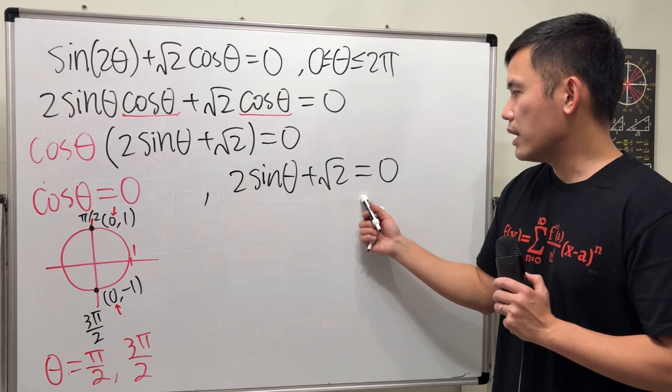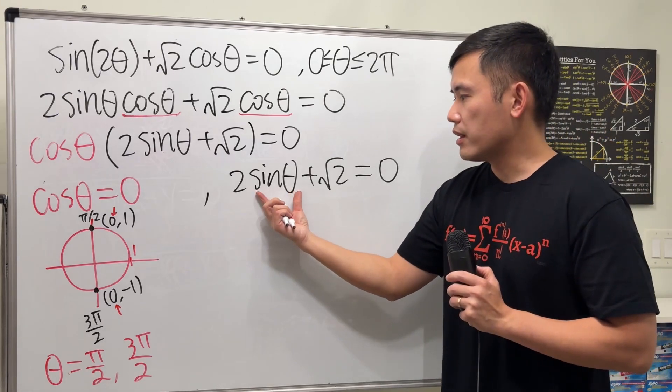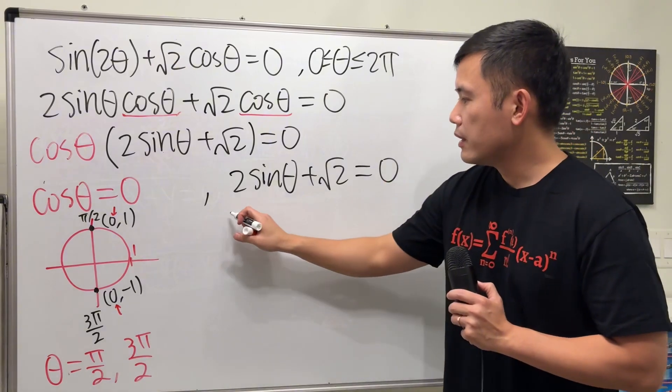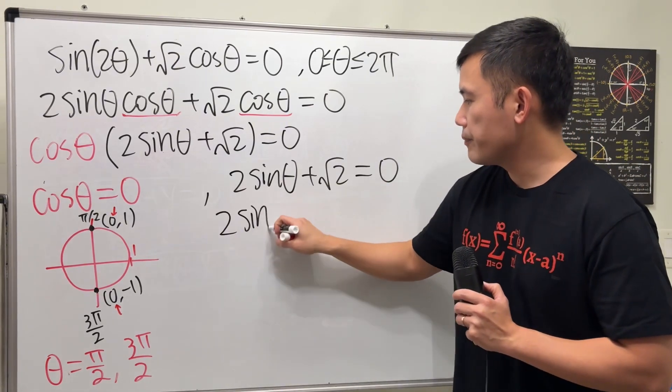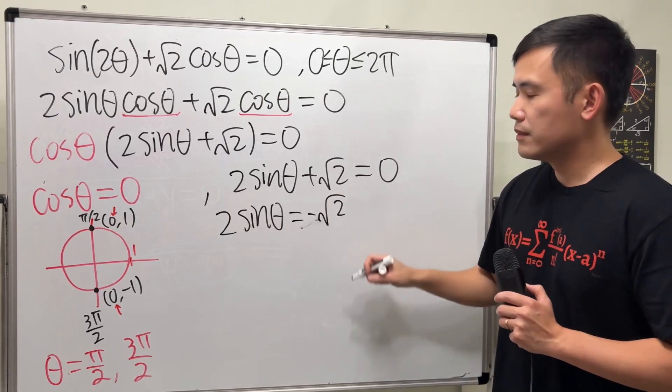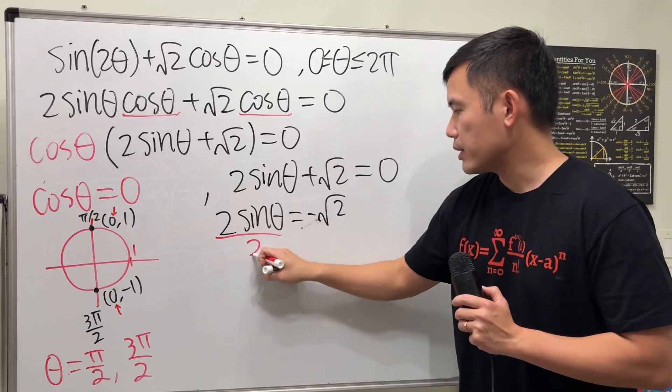Now as for this one, we are going to first isolate the theta and to do so, let's move the square root of 2 to the other side. So we get 2 sine theta is equal to negative square root of 2. Now divide both sides by 2.